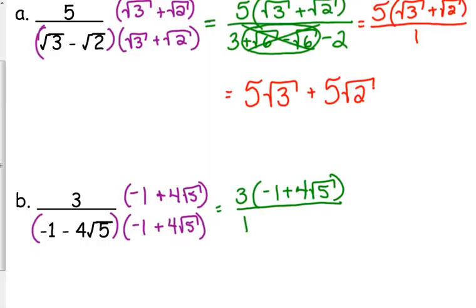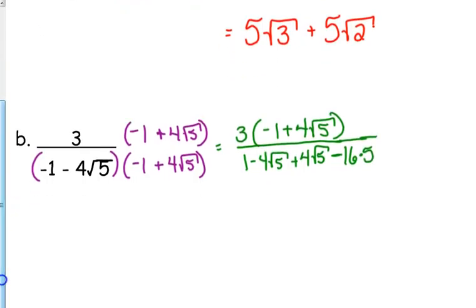Negative 1 times negative 1 is positive 1. The outside gives us negative 4 square root of 5. The inside gives us positive 4 square root of 5. And be careful, be careful with this when there's a coefficient and a term. Negative 4 times positive 4 is negative 16 times square root of 5 times square root of 5 is 5.